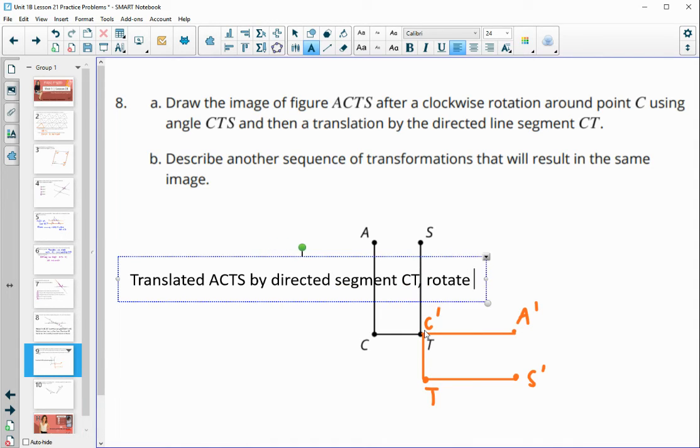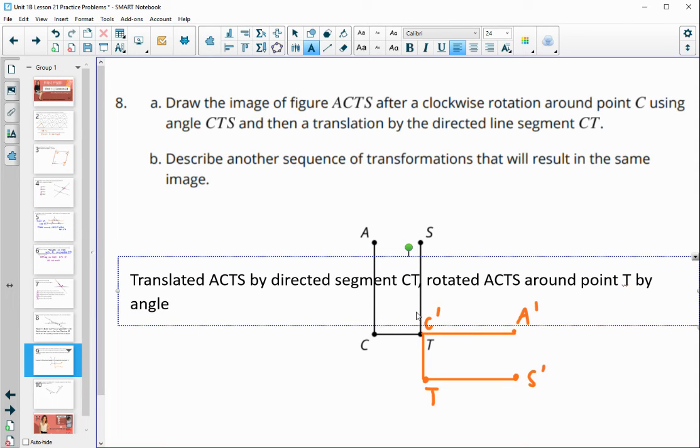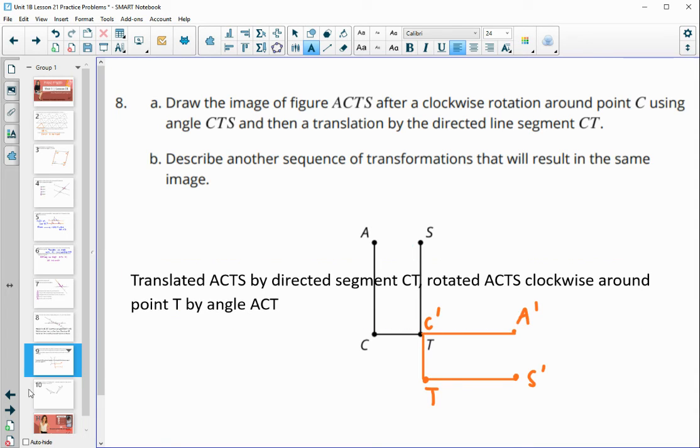Then we could have rotated ACTS around point T by angle. And we just need another 90 degree angle. So you could use that one again. Or you could use ACT. So I'm going to put direction. So clockwise. So rotate ACTS clockwise around point T by the angle ACT. And you would have ended up with the same thing.